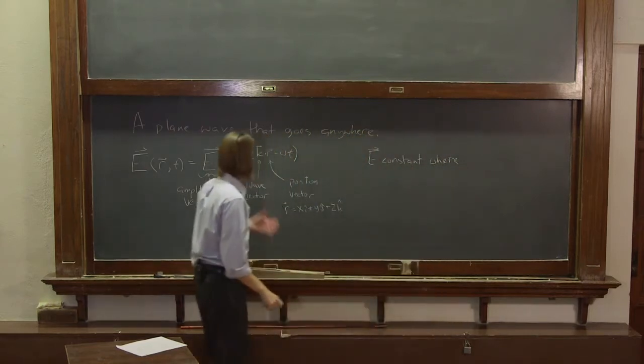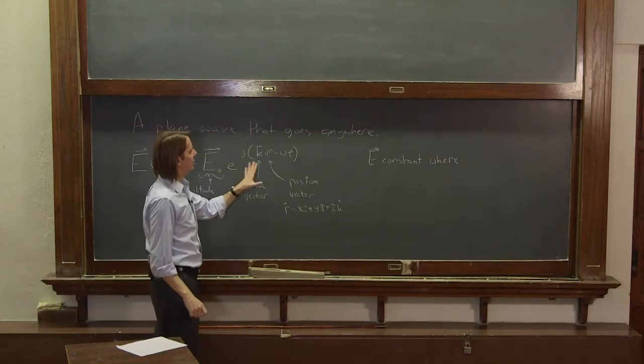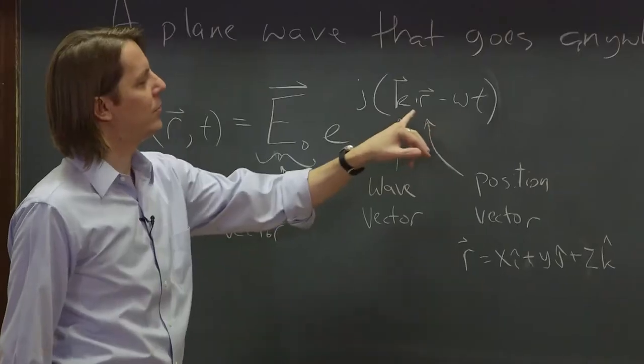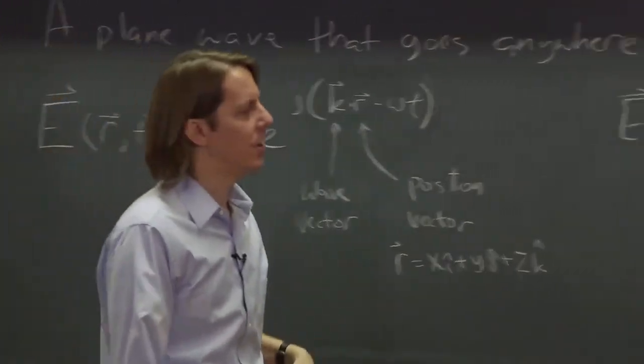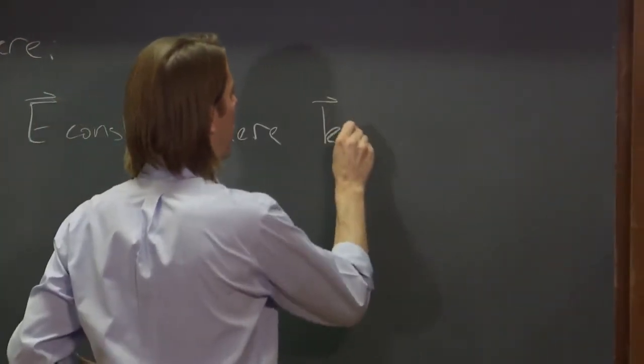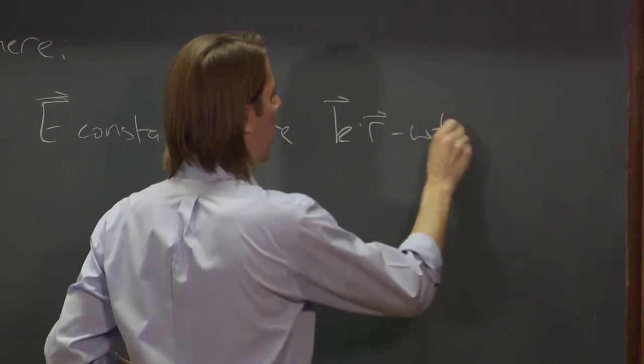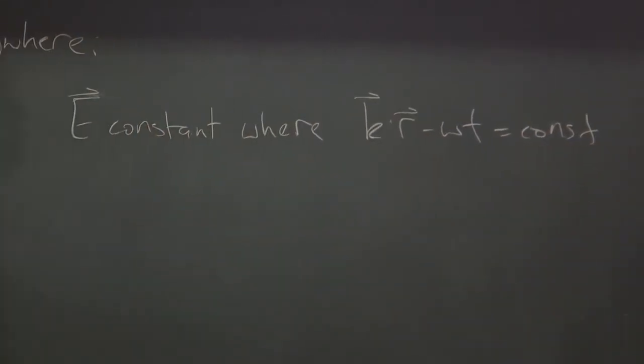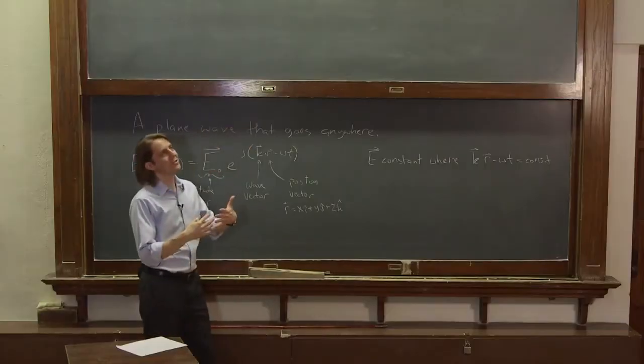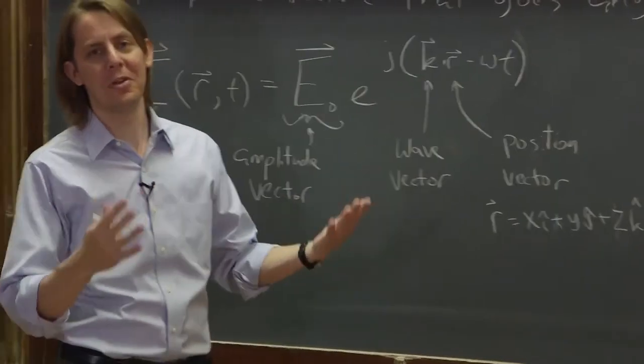Well, e-naught is a constant. We say it's constant based on what? It's in space and time. So it's constant where k dot r minus omega t is a constant. But if it's going to be a constant at one time, we need to always be a constant.